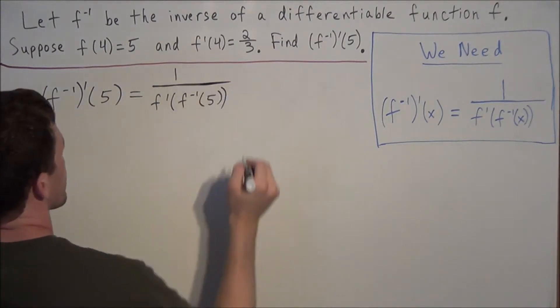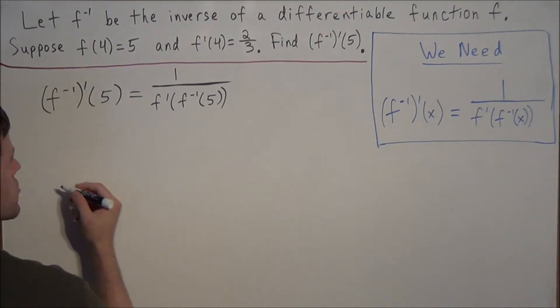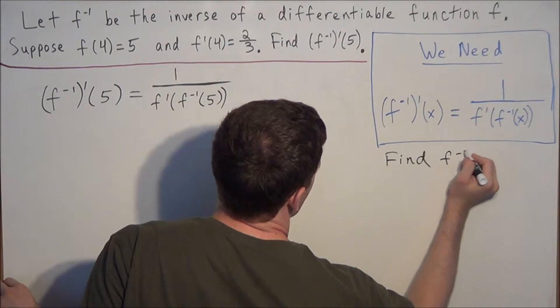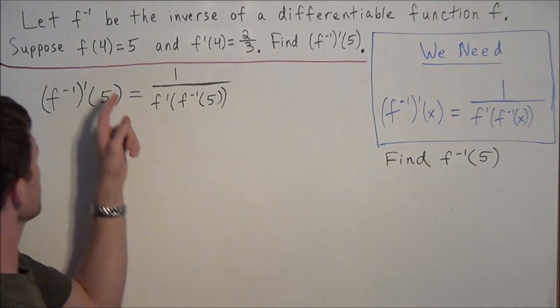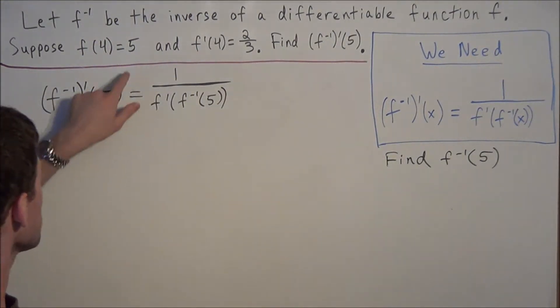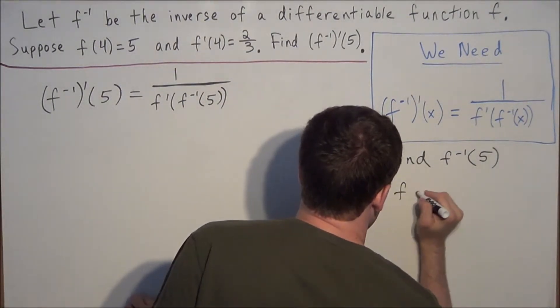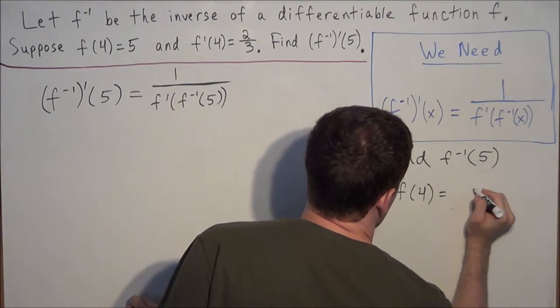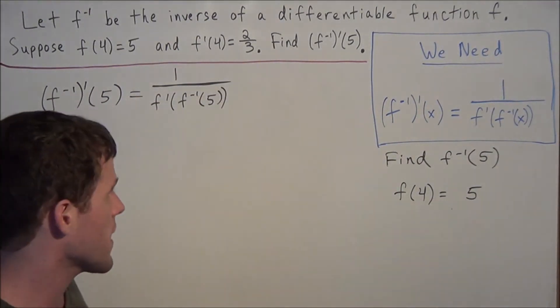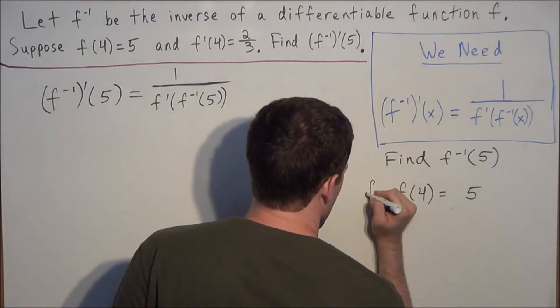But now we go back to our initial conditions. Right away we want to find f inverse of 5. Notice that we were not explicitly given what f inverse of 5 was, but we do have that f of 4 is equal to 5. So if we write this out, we could use the basic definition of an inverse function to find what f inverse of 5 is. All we need to do is take f inverse of both sides.